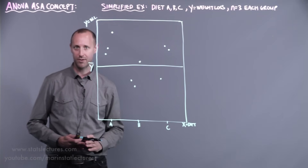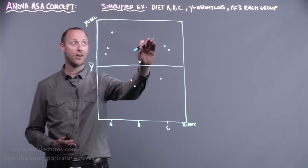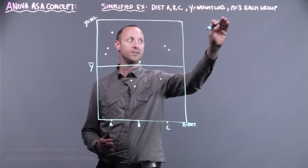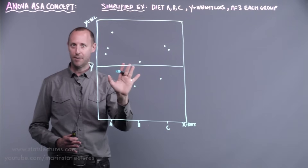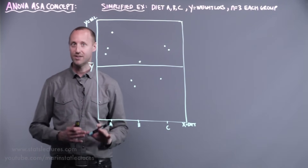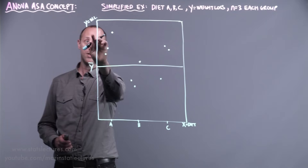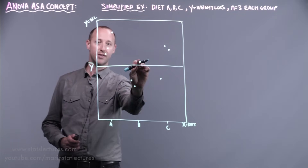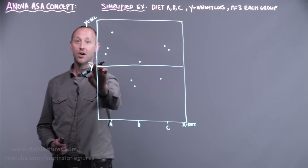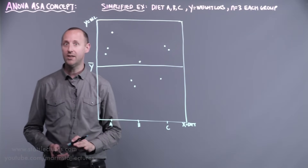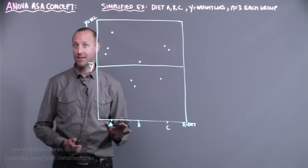We're going to work with a simplified example, continuing with comparing weight loss for diets, but simplified to only three diets with three observations in each group — so we have a simple dataset and the pictures don't get overcomplicated. For diet A, B, and C, here's the weight loss for the three individuals in each group. I've drawn in the overall mean — sometimes called the grand mean — which is the average weight loss across all individuals in the study, ignoring which diet they're on.